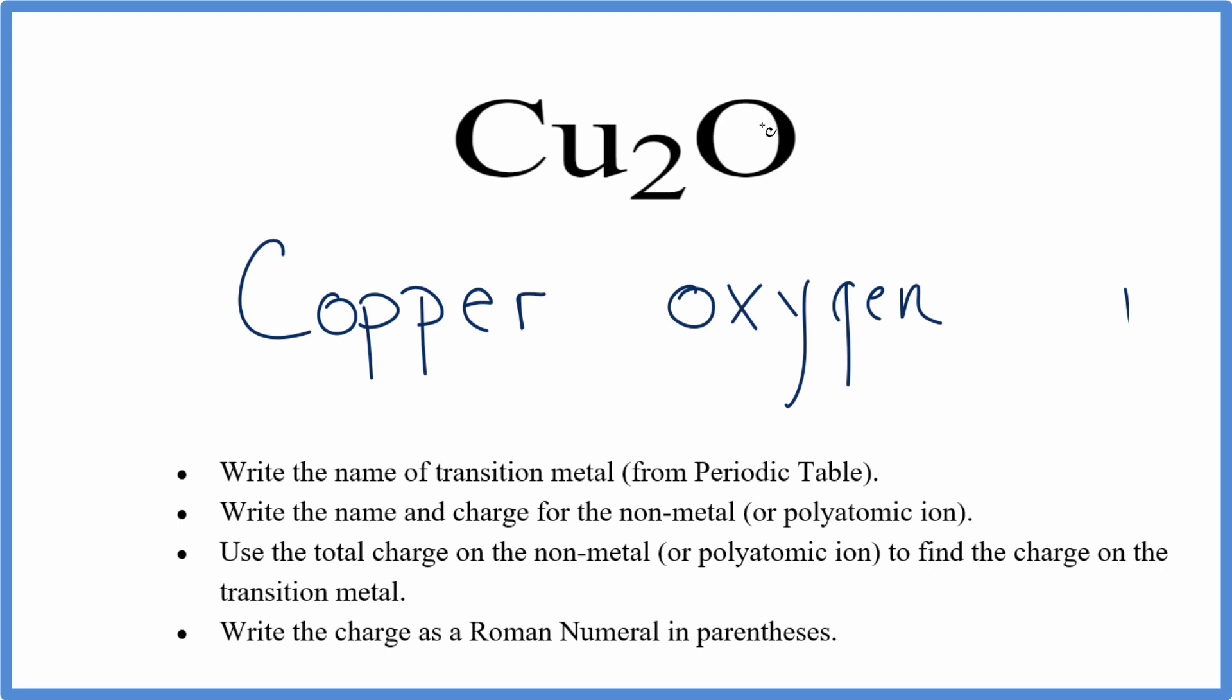We have a metal and a nonmetal, so we have an ionic compound. We'll get rid of the 'ygen' on oxygen and write 'ide'. That gives us copper oxide.